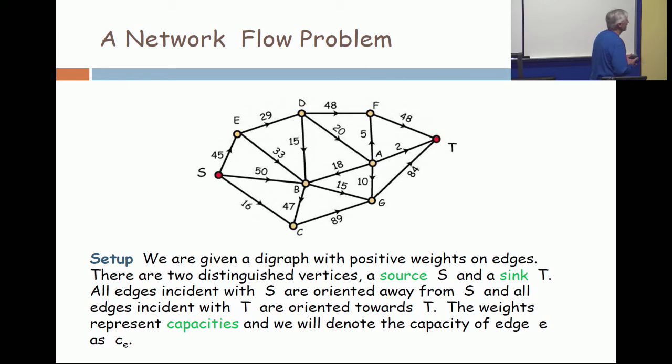I see a 29. Just ship it all across the top. See, capacity of 45, capacity of 29, capacity of 48, capacity of 48. Just ship 29 units across the top and keep everybody else zero.